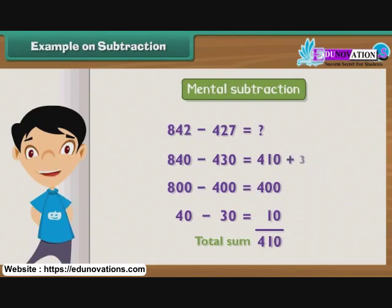But we subtracted an additional 3 when we subtracted 430 instead of 427, so we add 3 to the difference. We left out 2 when we subtracted 430 from 840 and not 842, so we add 2 more to the difference. Thus, the result of subtracting 427 from 842 is 415.